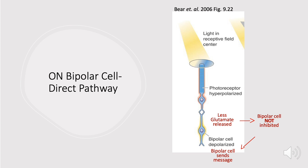Let's look at our first example — the on bipolar cell in the direct pathway. Here we see light shining onto the center of the receptive field. As we mentioned, photoreceptors are normally depolarized in the dark, so when there is light they're going to get hyperpolarized — shown in the first caption as 'photoreceptor hyperpolarized.' Because the photoreceptor is hyperpolarized, it's not getting as much signal, so it's going to release less glutamate.